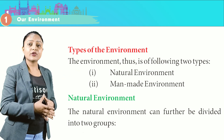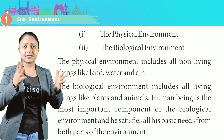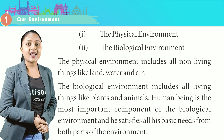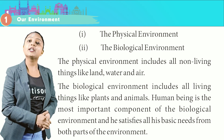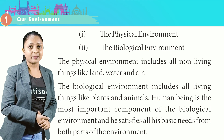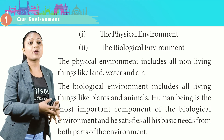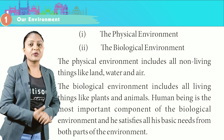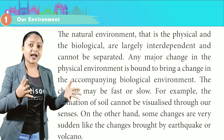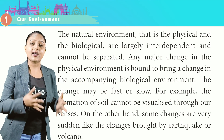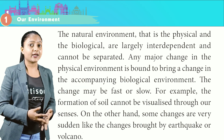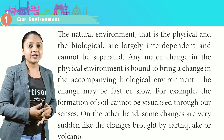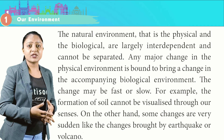The natural environment can further be divided into two groups: the physical environment and the biological environment. The physical environment includes non-living things like land, water, and air. The biological environment includes all living things like plants and animals. Human beings are the most important component of the biological environment. The natural physical and biological environments are largely interdependent and cannot be separated.